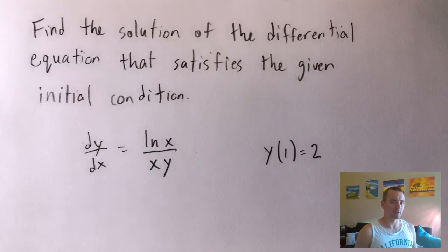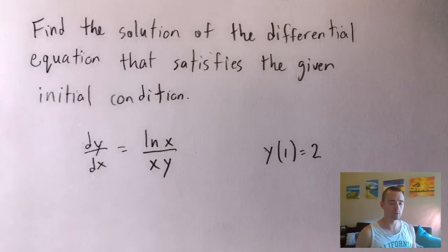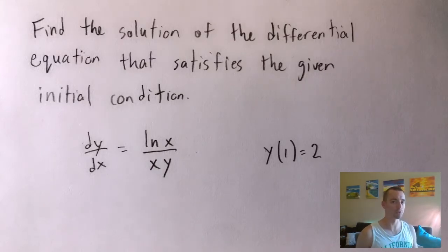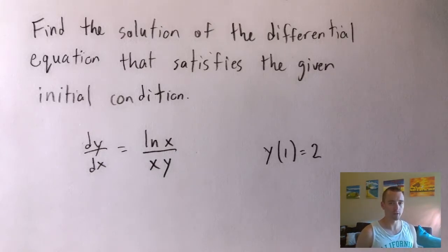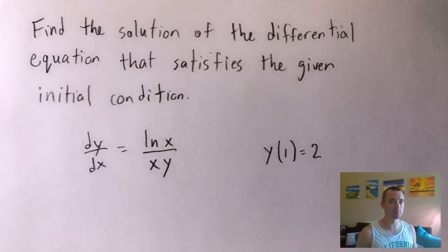I wanted to show you how to do this problem because it builds on the topic I've covered recently, which is how to find the solution of a separable differential equation. This basically just has the added layer of incorporating an initial condition. This is actually one of the formulas on my calculus 2 study guide, or my integral calculus cheat sheet that I came out with recently.